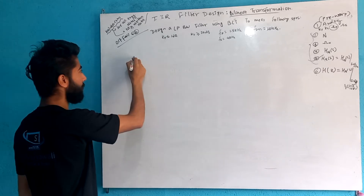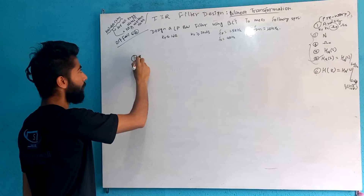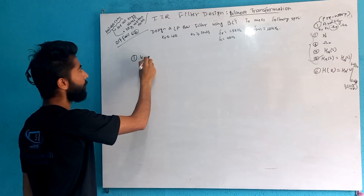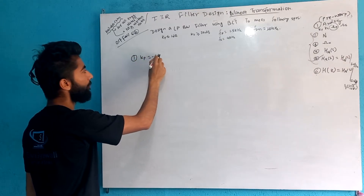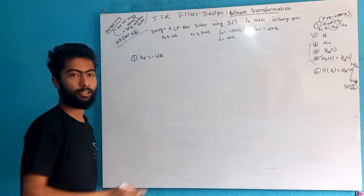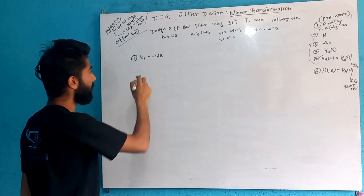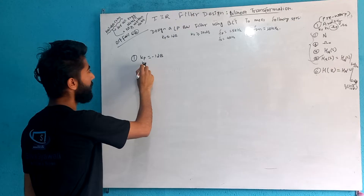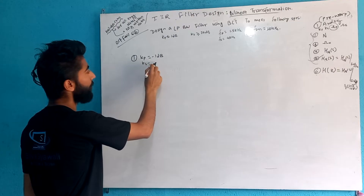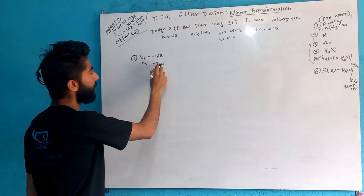So, number one: Kp is minus 1 dB, and Ks is minus 30 dB.